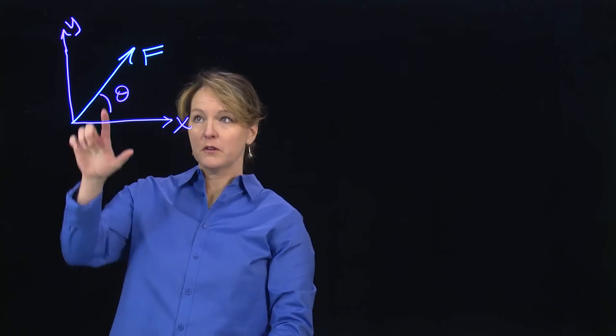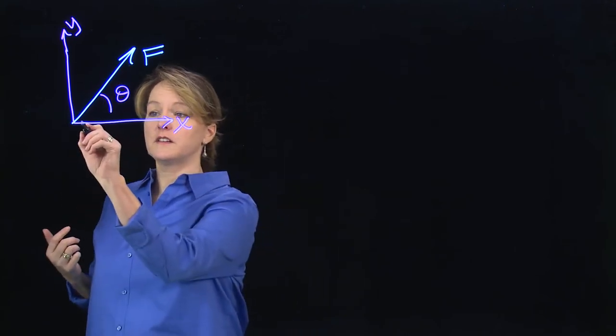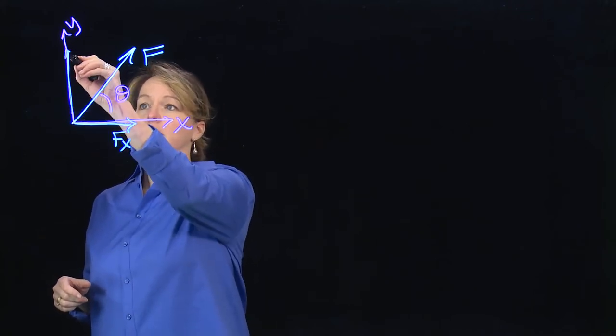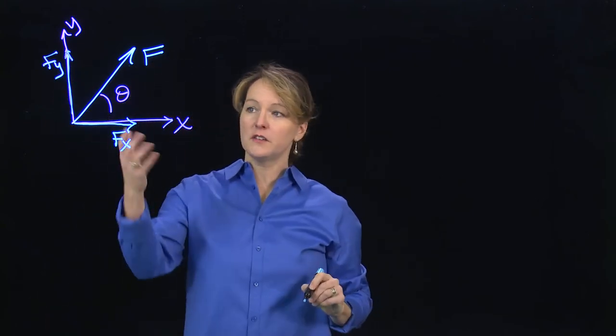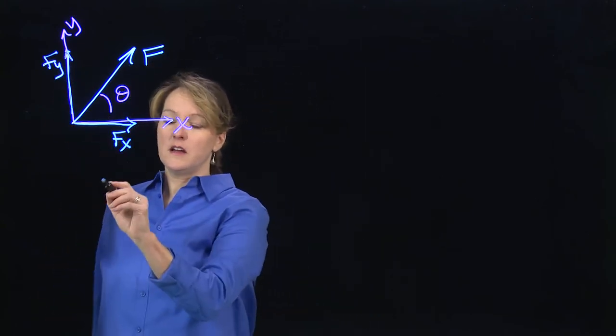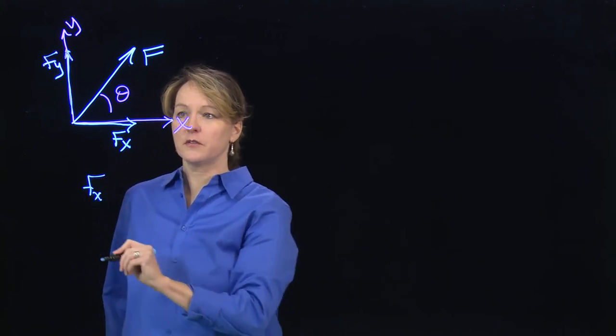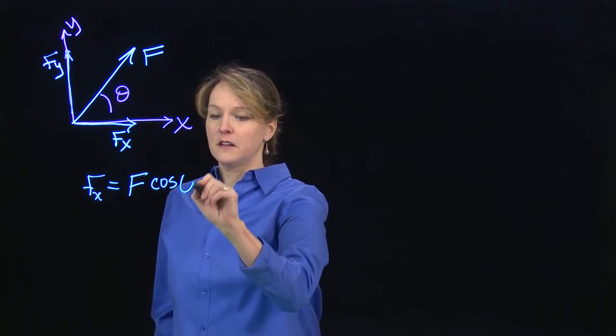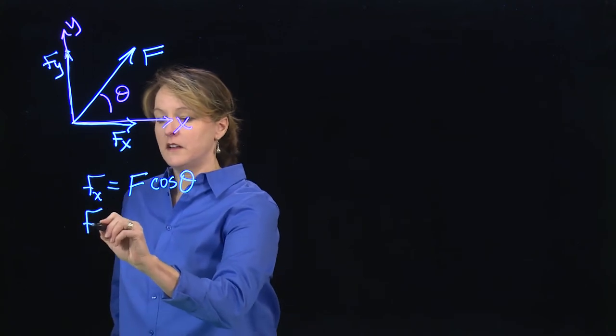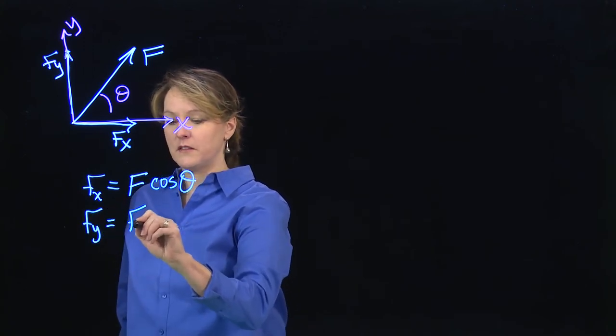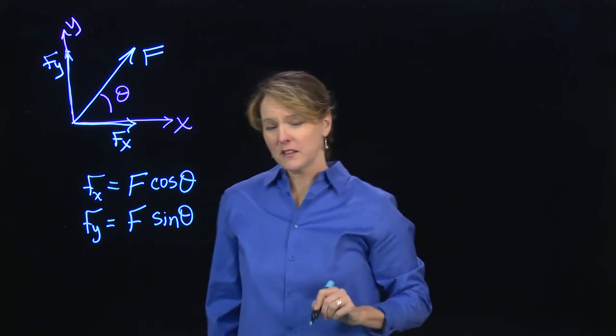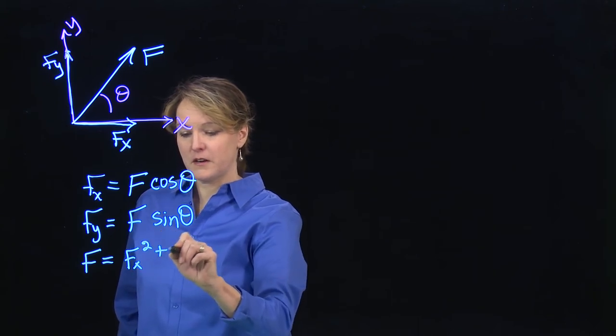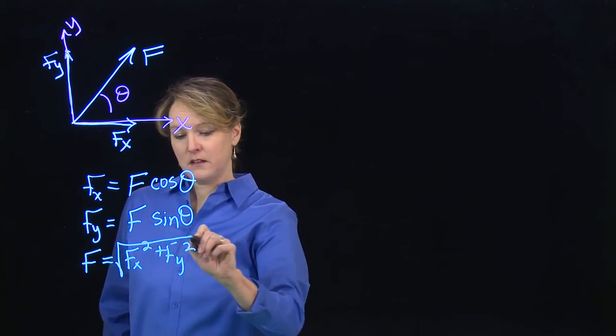And what engineers will then do is they will do what we call resolving this force. So we can resolve it into what's referred to as its x-components and its y-components. And I can just use geometry of that angle to calculate what those resultant forces are, resolved forces. So the force in the x-direction would be the magnitude of the force that we're looking at times cosine of that angle. And the force in the y-direction would be that force times the sine of that angle. So just a reminder of geometry. The resultant force, then, we could say is fx squared plus fy squared.